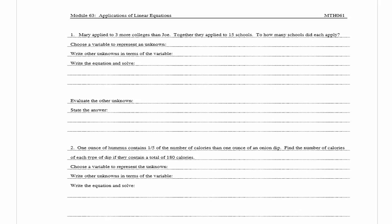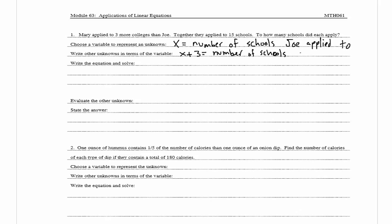The first direction says choose a variable to represent an unknown. So one unknown I'm going to represent by x, which is equal to the number of schools Joe applied to. The next direction says write the other unknowns in terms of the variable. Mary applied to three more than Joe, so x plus three is equal to the number of schools Mary applied to.